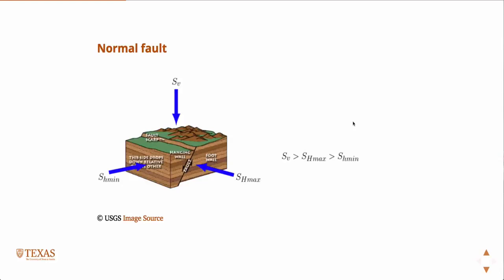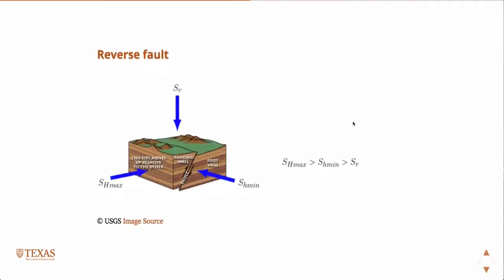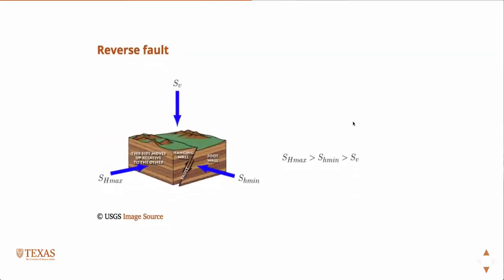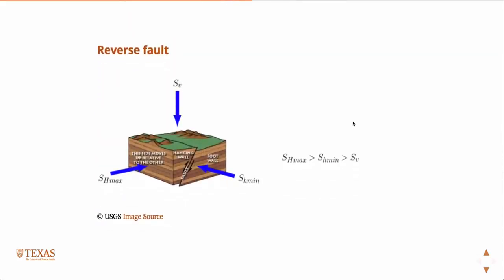If you memorize that, then reverse faulting is easy because it's just the reverse, the opposite. In a reverse faulting regime, the vertical stress is the lowest. It's the opposite of normal. And of course, this also accommodates this type of fault motion. If the two horizontal stresses are greater than the vertical stress, the hanging wall is going to have a tendency to move up. The one you have to memorize is this one: vertical stress is greatest in a normal faulting regime, and then it's easy to remember that reverse is the opposite of that one, the lowest.